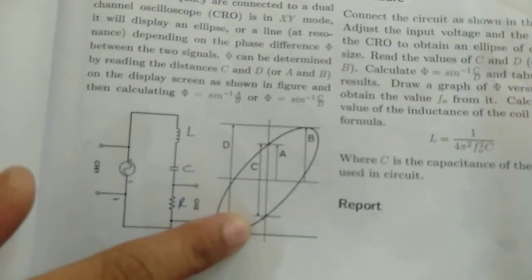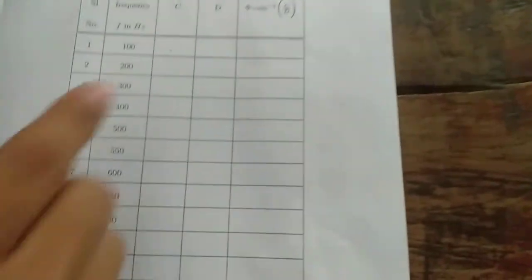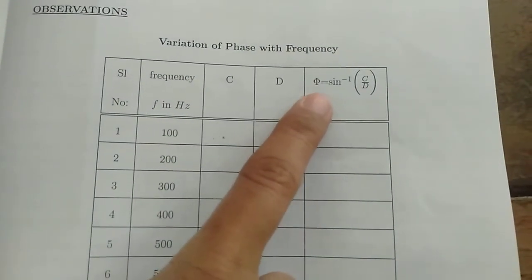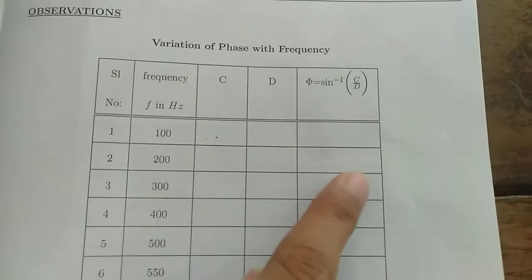Once we come to know the value of C and D, you can just substitute that value of C and D in this formula for the phase difference given by phi is equal to sin inverse of C by D.